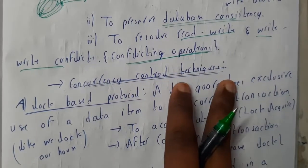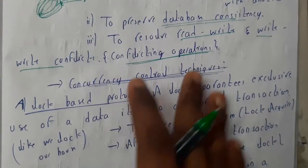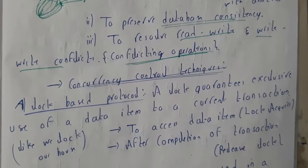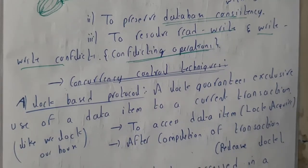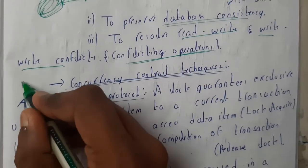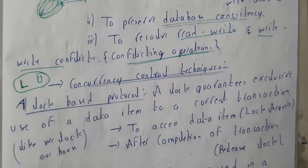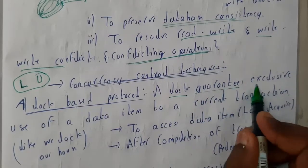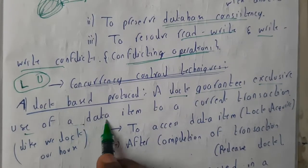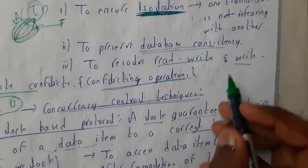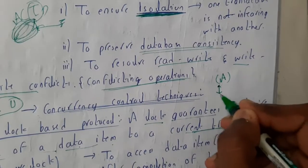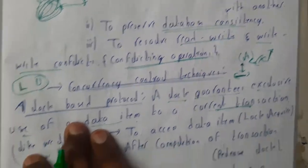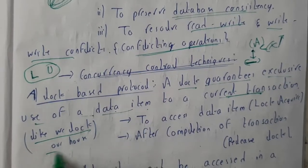There are two main concurrency control techniques. In this lecture we'll start the first technique: the lock-based protocol. A lock guarantees exclusive use of a particular data item to the current transaction. For example, if you lock variable A, you can use A until you unlock it, and no other transaction can access A during that time.